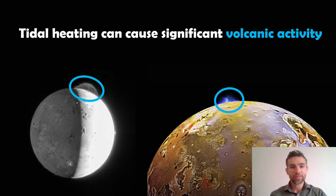So here's Io. And there's some volcanoes pointed out for you. So this tidal heating can cause significant volcanic activity. We know that from Io. And we're going to find out just how significant that could be as we work through our calculation.